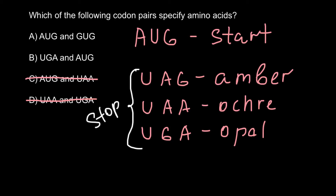Answer B has the sequence U, G, A — and this is one of the stop codons that doesn't specify an amino acid. So we can cross out this answer.